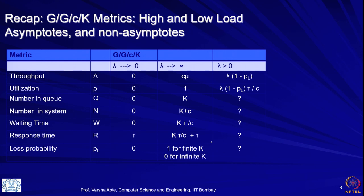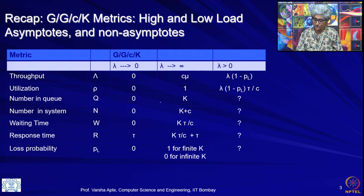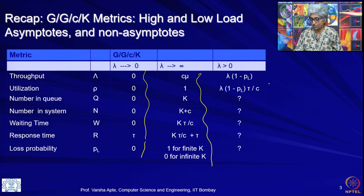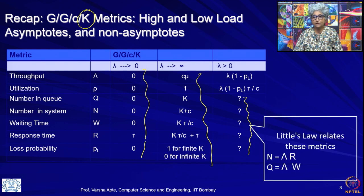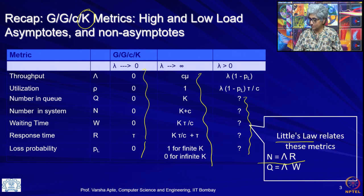This is our standard recap table given for reference. We have asymptotic values for many metrics. For the non-asymptotes, especially with finite buffer, we may not have a lot of metrics — we just know their upper bounds. For waiting time and number of customers in the system, what we have is a relationship, which is Little's law: n equals lambda times r, where n is the number of customers, lambda is throughput, and r is response time.